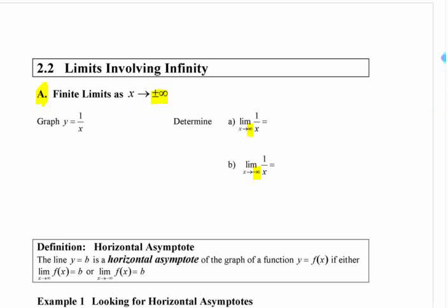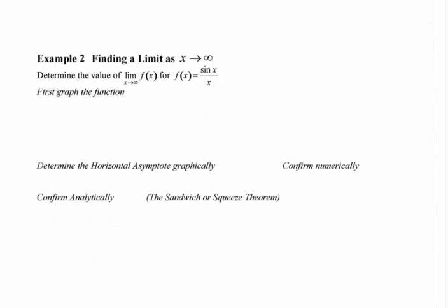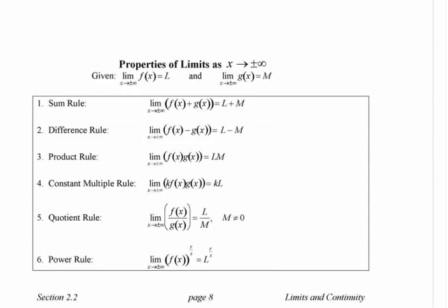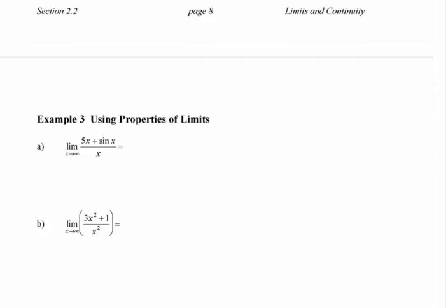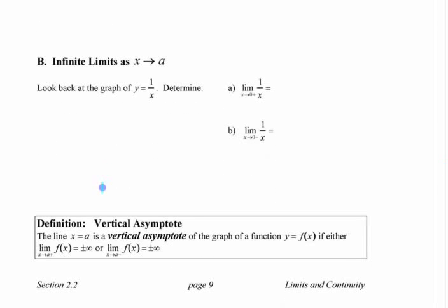Part B is sort of the reverse of that. Part B is the reverse: infinite limits as you approach a finite number.